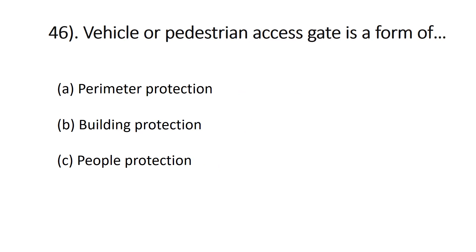Question number forty-six: vehicle or pedestrian access gate is a form of — A) perimeter protection, B) building protection, C) people protection. We use vehicle or pedestrian access gates to protect the building. The correct answer is B, building protection.